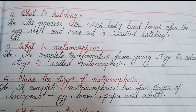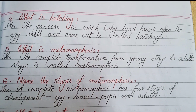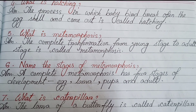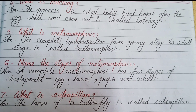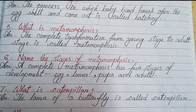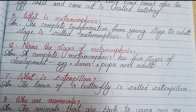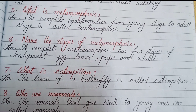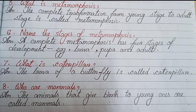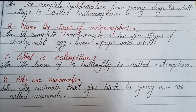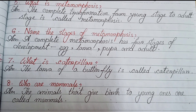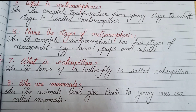Question four: What is hatching? The process in which baby birds break open the egg shell and come out is called hatching. Question five: What is metamorphosis? The complete transformation from young stage to adult stage is called metamorphosis. Question six: Name the stages of metamorphosis. A complete metamorphosis has four stages of development: egg, larva, pupa, and adult.